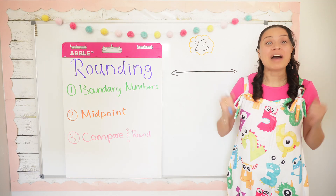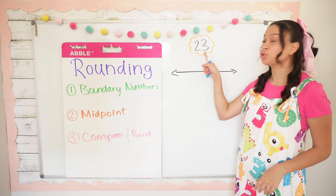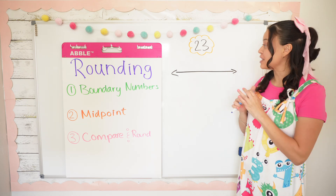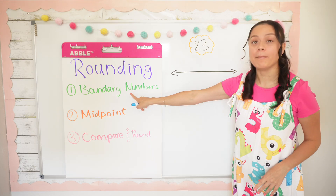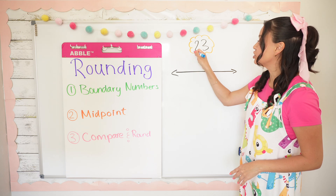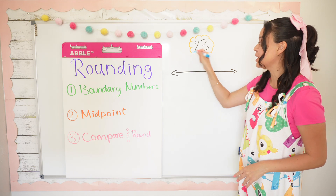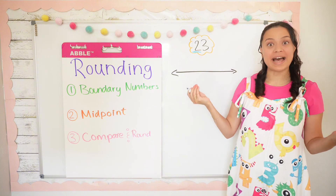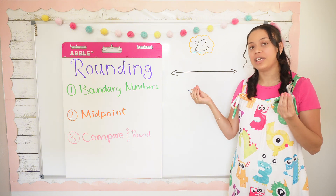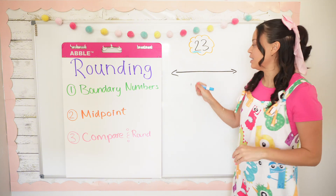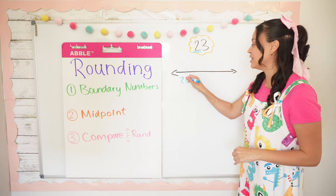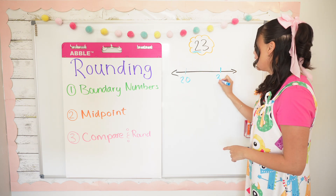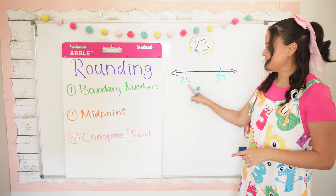Okay math besties, we have our first example. We're going to round the number 23 to the nearest 10 on a number line. The first step is to find the boundary numbers. I'm going to underline my tens place because we're rounding to the nearest 10. So I'm going to ask myself: what tens family does 23 live in? 20 — and then the next tens family is 30. So these are the boundary numbers.